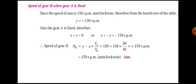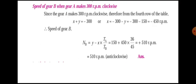Now for the second condition — speed of gear B when gear A makes 300 RPM clockwise. Gear A speed is minus 300 RPM, so x plus y equals minus 300 RPM. We already know y equals 150, so substituting, x equals minus 300 minus 150, which gives x equals minus 450 RPM, or the final x value is minus 450 RPM.